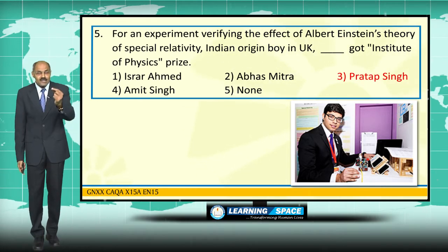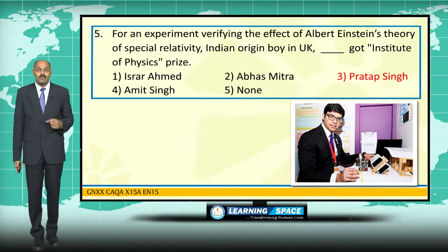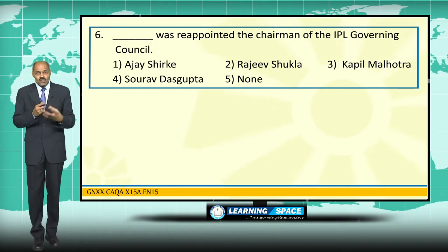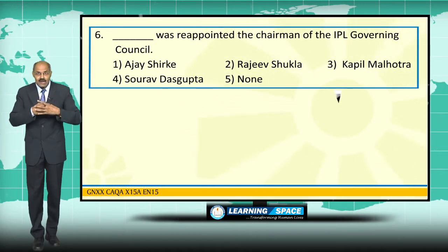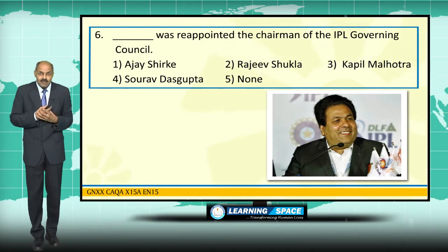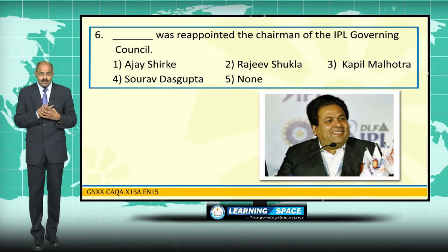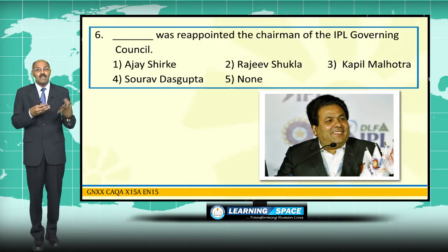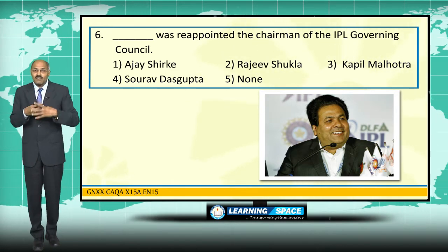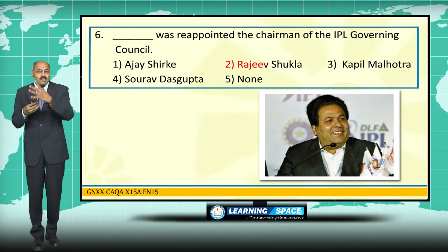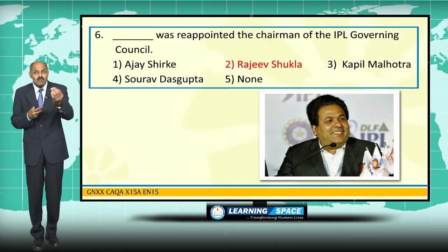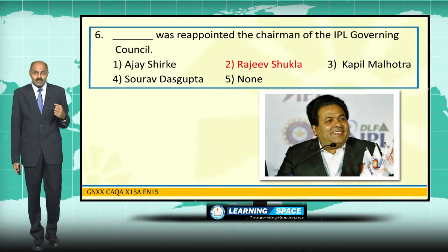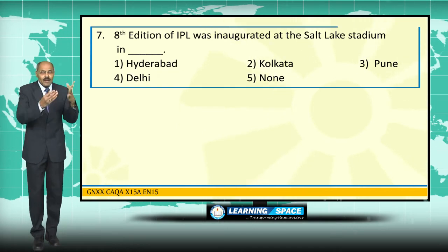Rajiv Shukla was reappointed as the Chairman of the IPL Governing Council. Previously, in 2013, he resigned subsequent to the spot-fixing scandal, and now he has been reappointed. Please don't forget the name: Shri Rajiv Shukla.